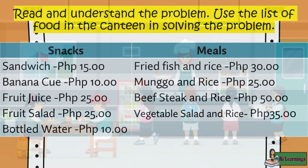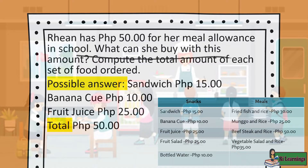Read and understand the problem. Use the list of food in the canteen to solve the problem. Snacks: Sandwich 15 pesos, Banana Q 10 pesos, Fruit Juice 25 pesos, Fruit Salad 25 pesos, Bottled Water 10 pesos. Meals: Fried Fish and Rice 30 pesos, Mungo and Rice 25 pesos, Beef Steak and Rice 50 pesos, Vegetable Salad and Rice 35 pesos. Rian has 50 pesos for her meal allowance. What can she buy? One possible answer: Sandwich (15) + Banana Q (10) + Fruit Juice (25) = Total 50 pesos.